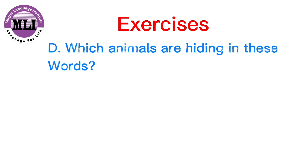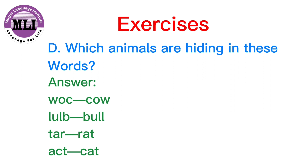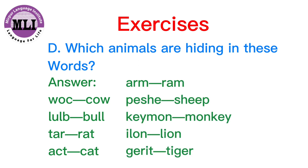In question number D: Which animals are hiding in these words? W-O-C makes cow. L-U-L-V makes bull. T-A-R makes rat. A-C-T makes cat. A-I-R-M makes ram. P-E-S-H-E makes sheep. K-E-Y-M-O-N makes monkey. I-L-O-N makes lion. G-E-R-I-T makes tiger.